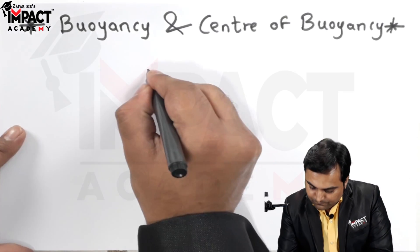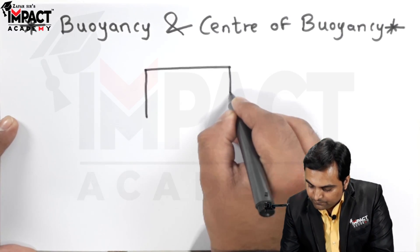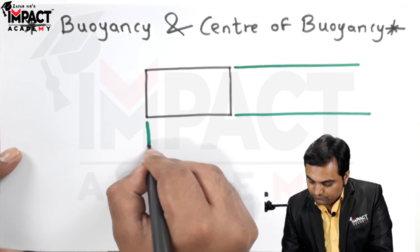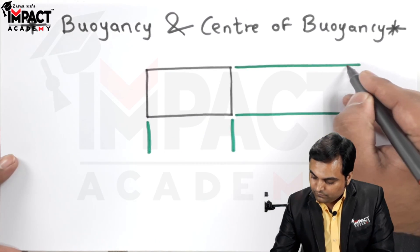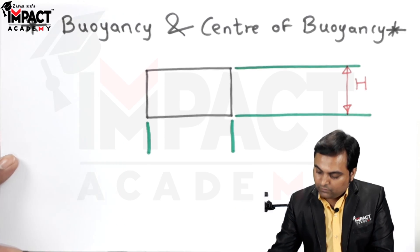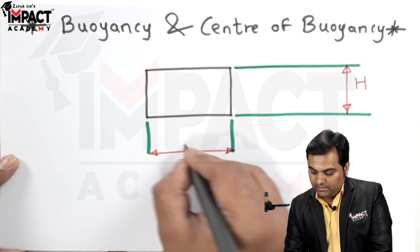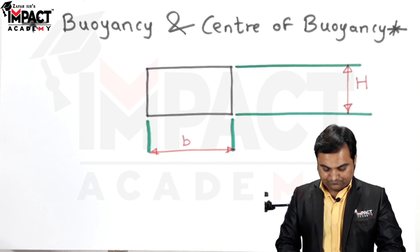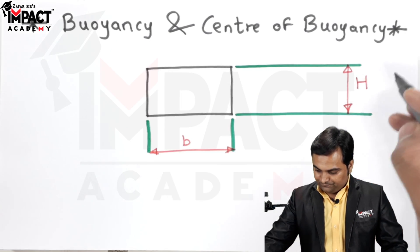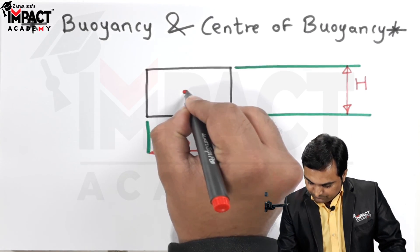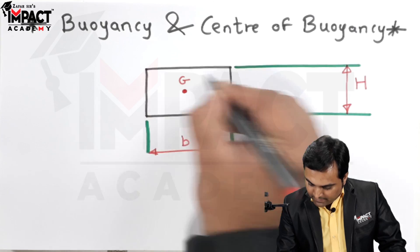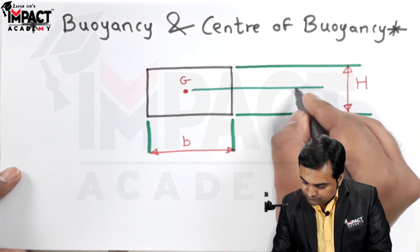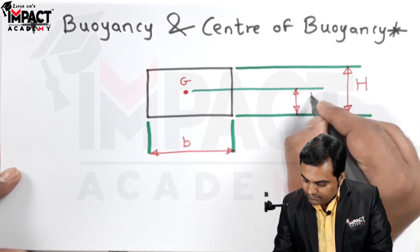Here I will draw a diagram. There is a rectangular block of height H and width b. Since I have considered a rectangular block, its centroid would be exactly at half of this height, that is at H/2 distance.